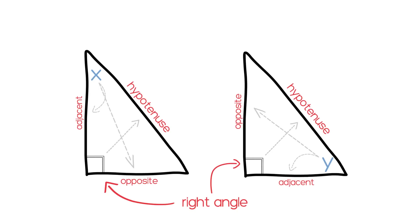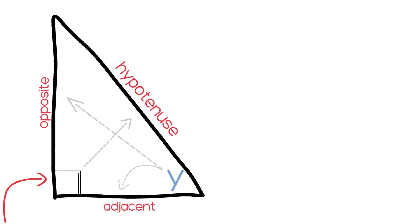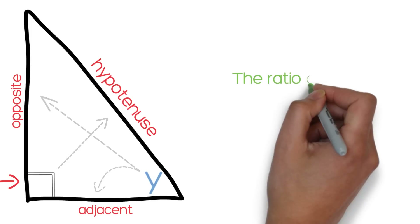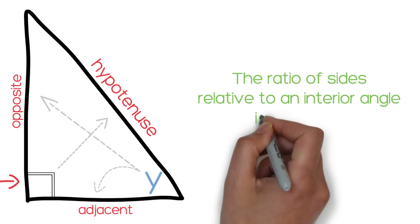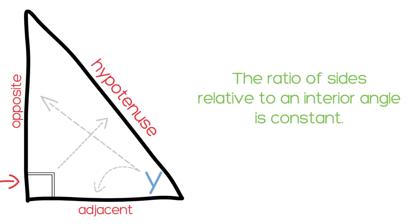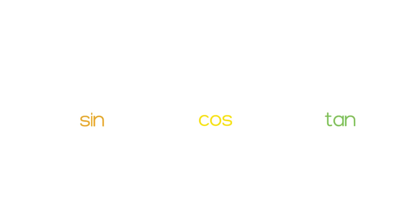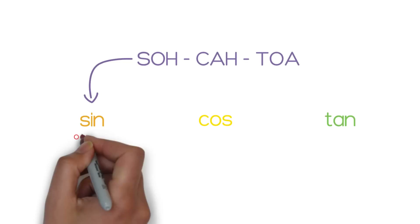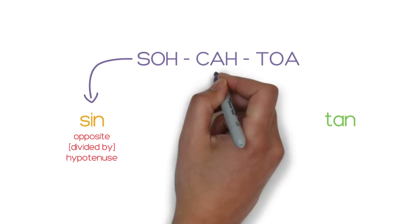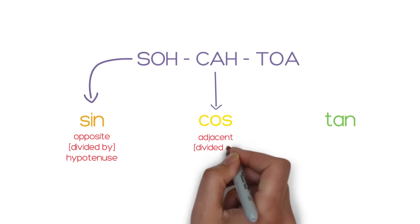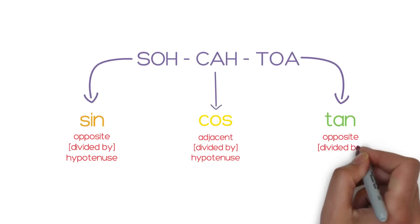Making use of the relationship between the angles and legs is how trigonometry works. The way two sides of a right triangle relate to a particular angle is always the same. In more mathematical terms, the ratio of sides relative to an interior angle is constant. Because this ratio never changes, we can always use it to calculate an angle or leg measurement that we do not know. Those words — sine, cosine, and tangent — are just the labels we give to the ratios. Here's an easy way to remember the ratios: SOH-CAH-TOA. Sine is simply the ratio of opposite and hypotenuse. Cosine is the ratio of adjacent and hypotenuse. And tangent is the ratio of opposite and adjacent.